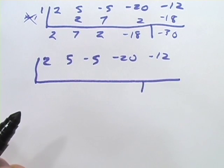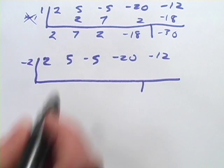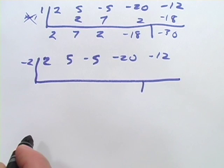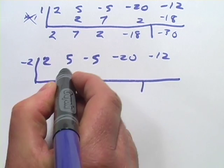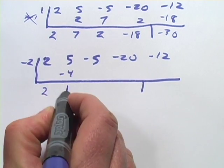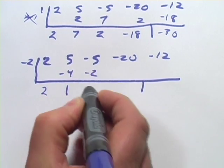I'm going to set this up one more time. And maybe I will try negative 2 this time. Just looking at the numbers, I'm thinking maybe this might work. So bring down the 2. Multiply. Add. Multiply. Add. Multiply. Add.